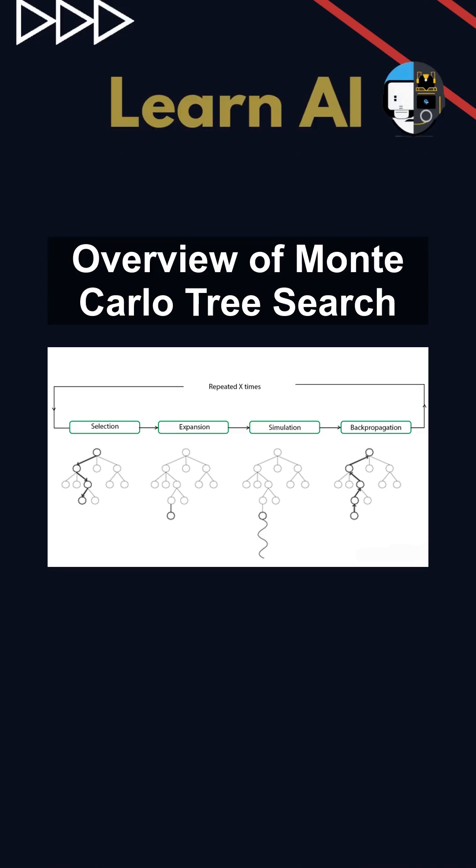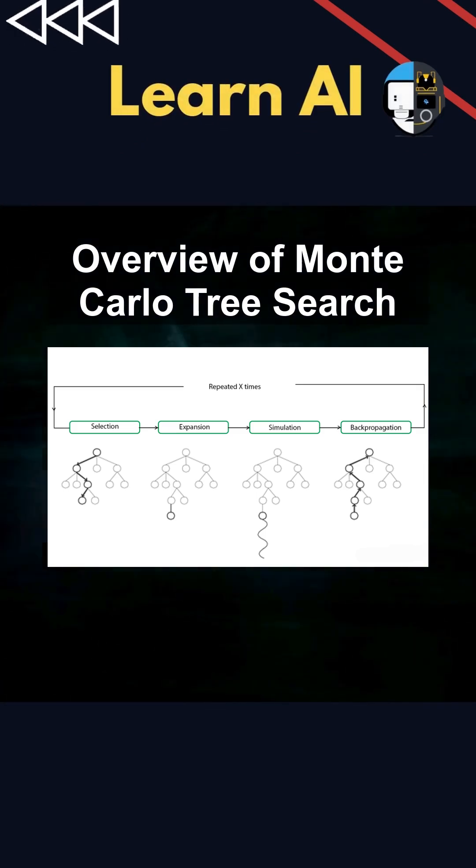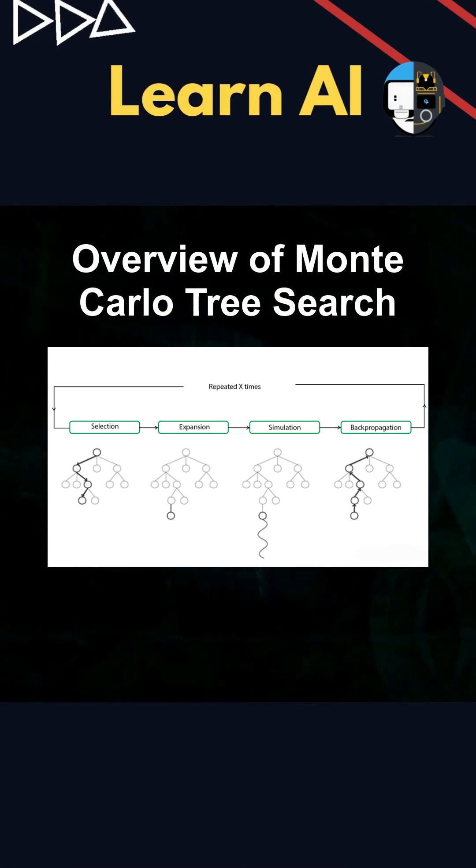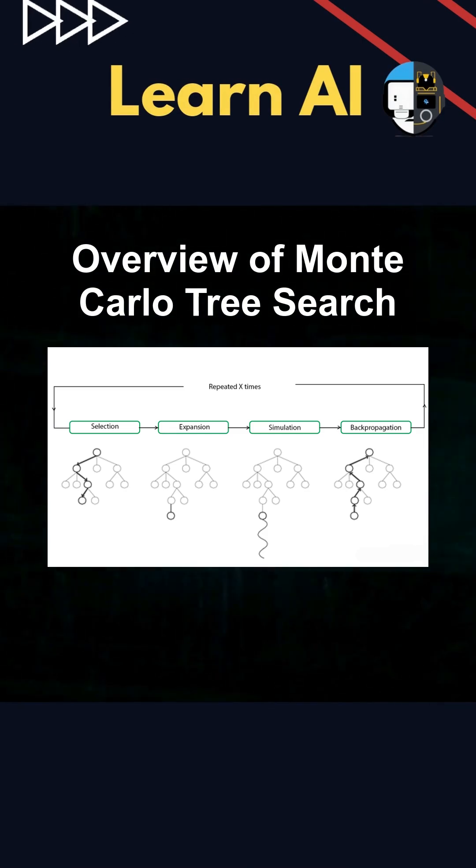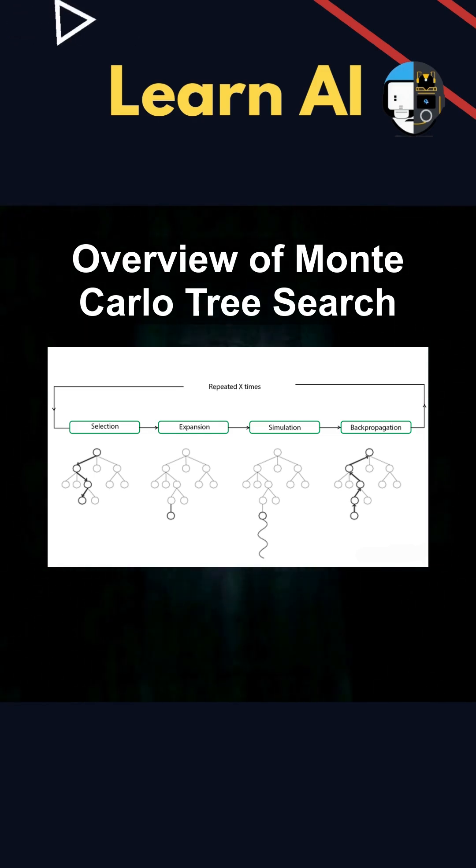Unlike traditional algorithms, MCTS doesn't require an exhaustive search of all possibilities. Instead, it employs a probabilistic method, using random sampling to evaluate potential moves. This makes it particularly adept at handling large and complex decision trees.